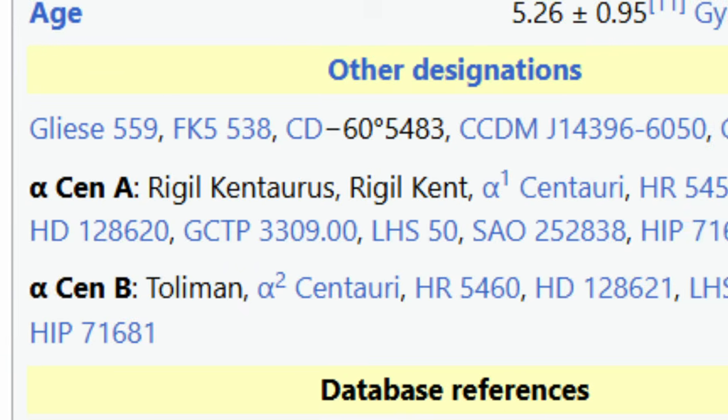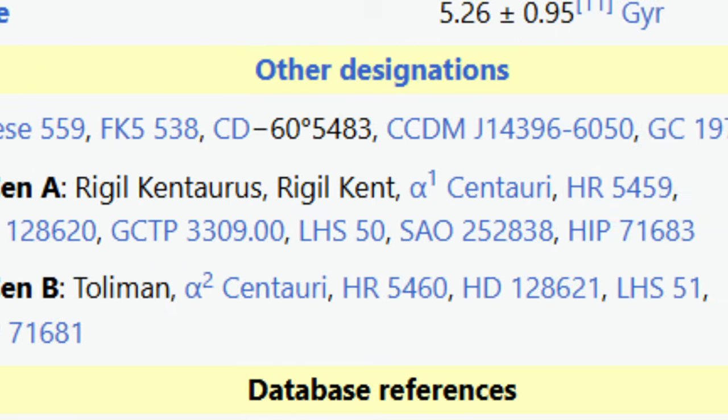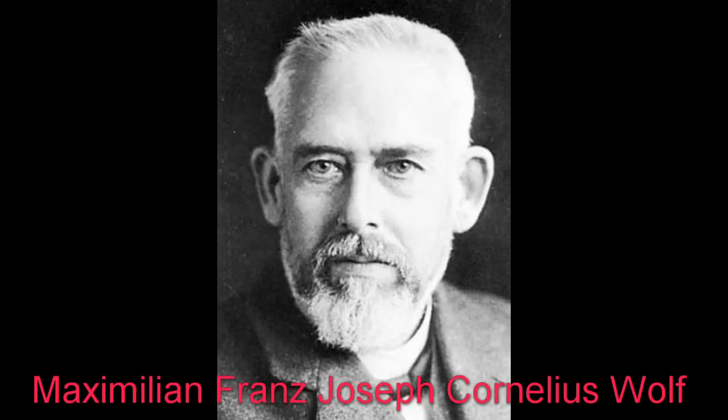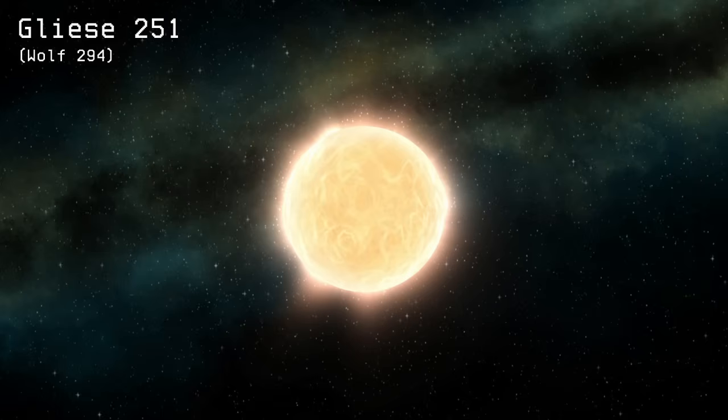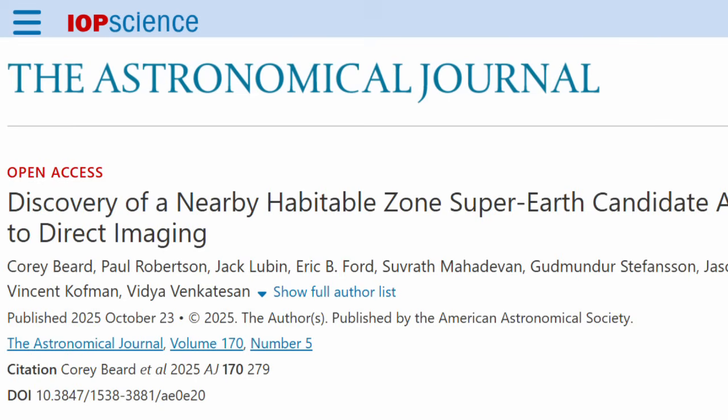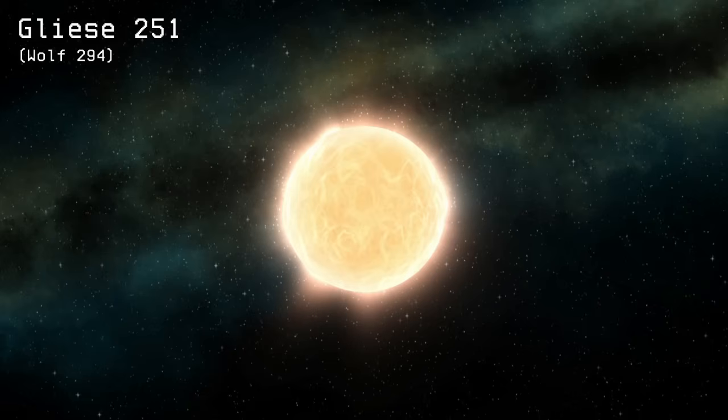Nearby stars tend to have many names, and while it may be the 294th planet discovered by the Teutonically redoubtable Maximilian Franz Josef Cornelius Wolf, it was also the 251st discovered by the heroically obsessive Wilhelm Gliese, who wouldn't let four years in a Soviet gulag deter him from finding stars. Which is why the paper in question calls it Gliese 251. I suppose I'll have to start calling it that as well.